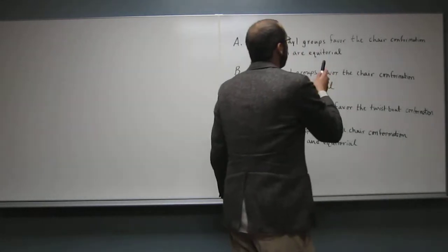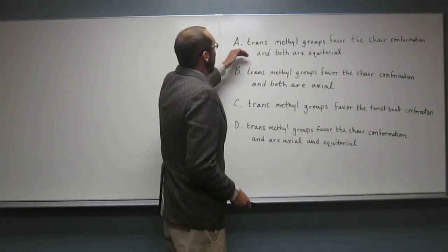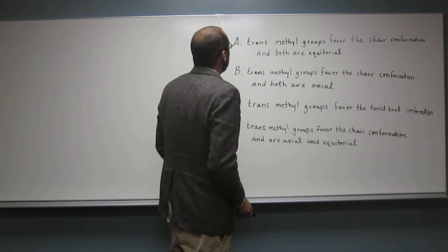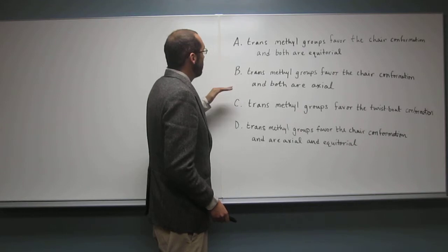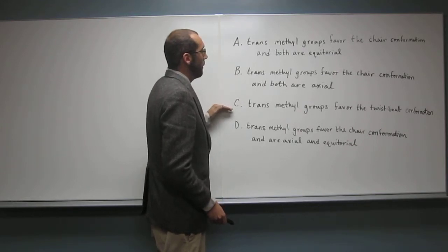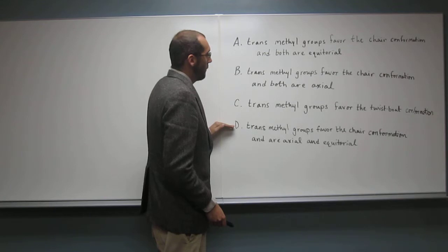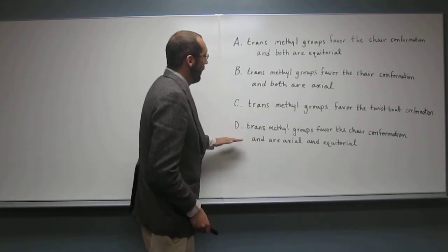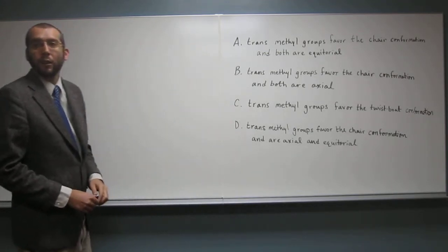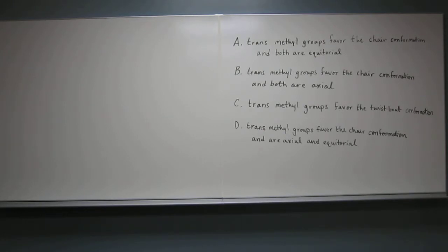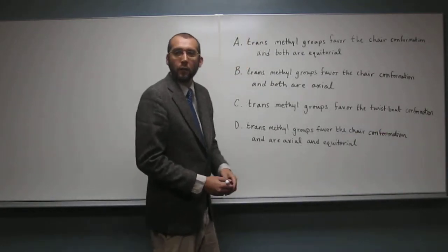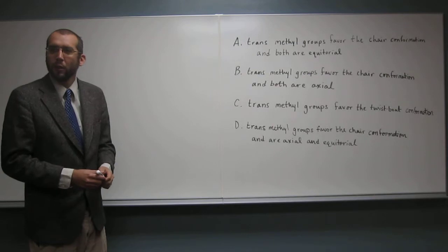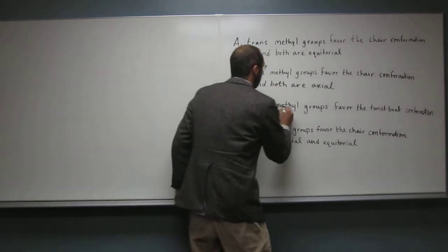And then it gives you these four statements here. Transmethyl groups favor the chair conformation and both are equatorial; transmethyl groups favor the chair conformation and both are axial; transmethyl groups favor the twist boat conformation; and transmethyl groups favor the chair conformation and are axial and equatorial. Can we get rid of any of those choices to begin with? We can get rid of C. Because the twist boat conformation is always the highest energy conformation. So let's just cross that off of our list.